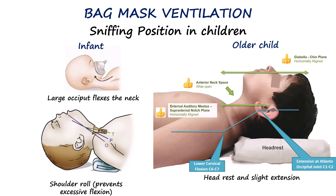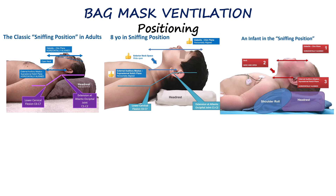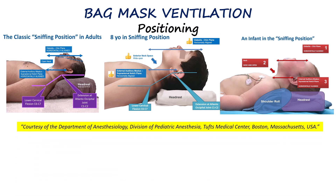Across all age groups, the universal principle remains the same: the goal is to align the external auditory meatus with the suprasternal notch and to bring the glabella-chin plane close to horizontal. The use of a shoulder roll, headrest or ramping all depends on achieving this airway alignment, irrespective of the patient's age.